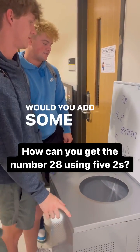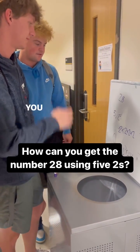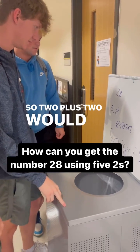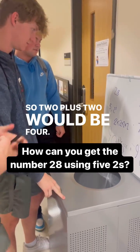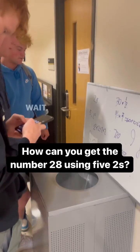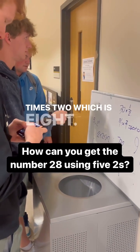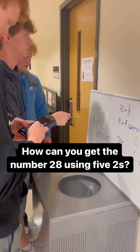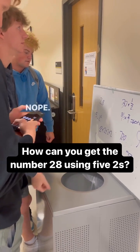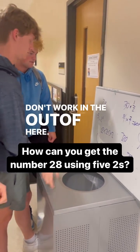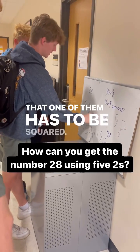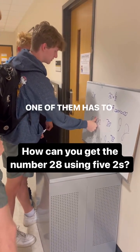Would you add some twos? You could only use five twos. So two plus two would be four — wait, wait, wait. Times two, which is eight. Plus two — nope. Then we're getting out of hand. One of them has to be squared, I'm telling you. One of them has to be squared.